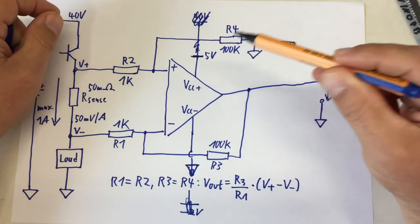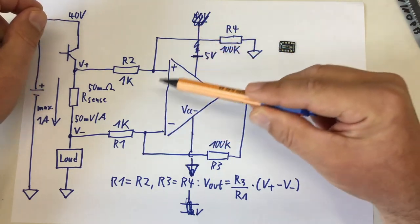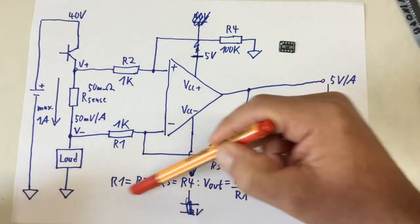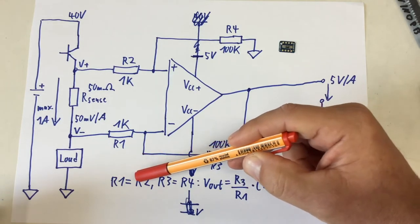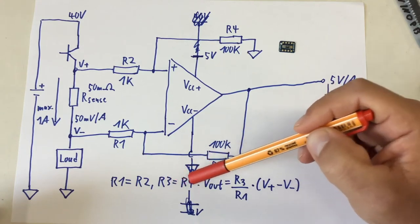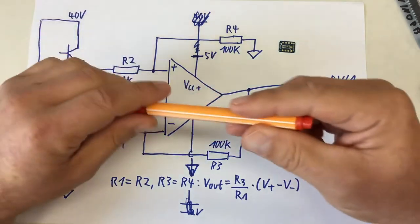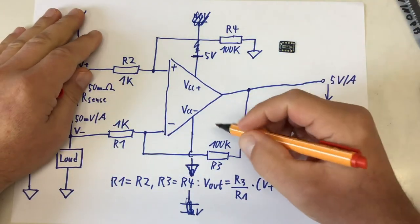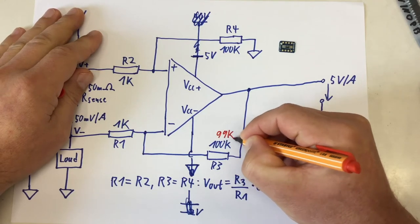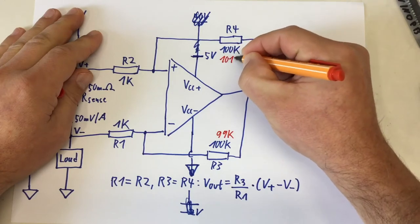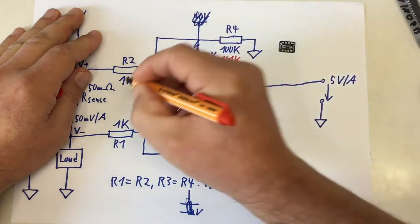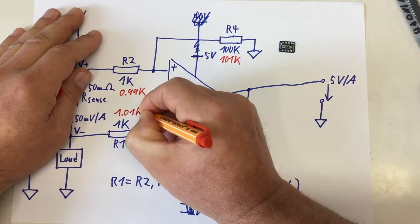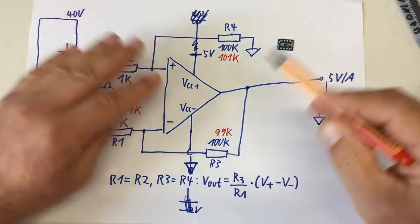The second problem I stumble about needs a little bit of number crunching. It basically stems from that formula, which is only valid if R1 exactly equals R2 and R3 exactly equals R4. So let's suppose for an example: we are one percent — only one percent — off on each resistor, and I'm constructing here a worst case scenario. So 99k, 101k, 0.99k, and 1.01k.